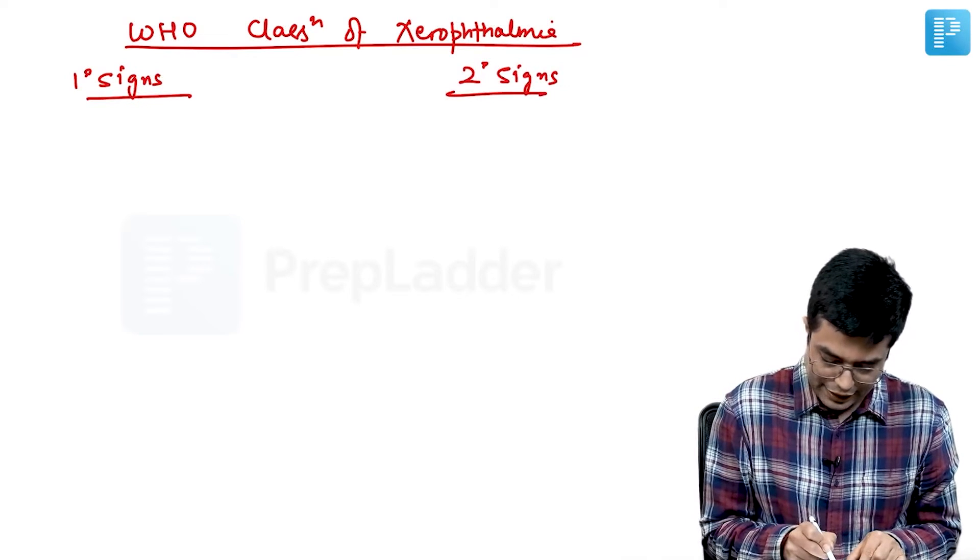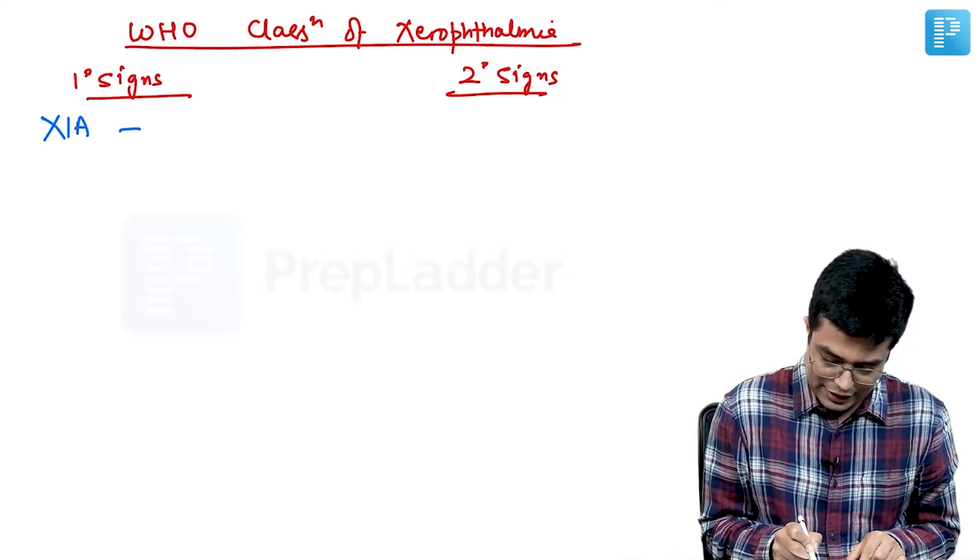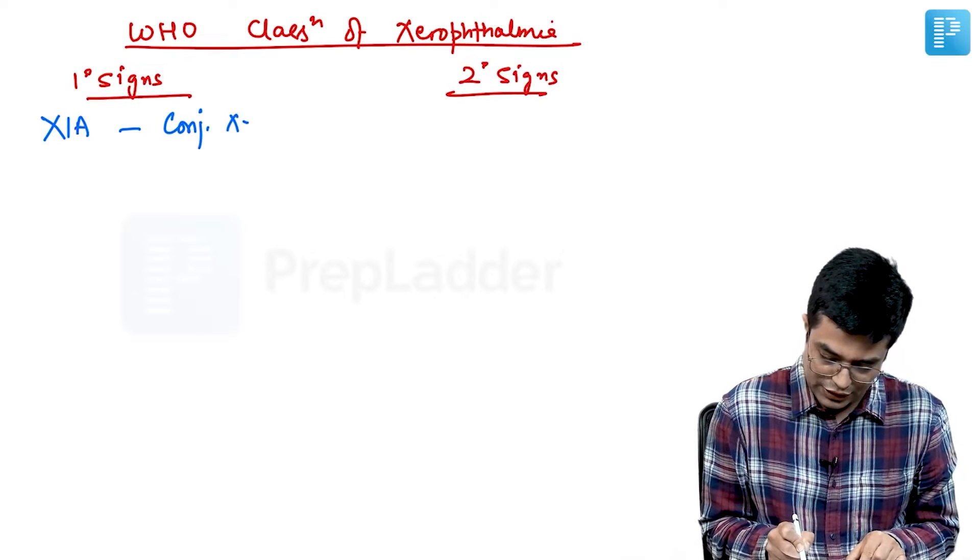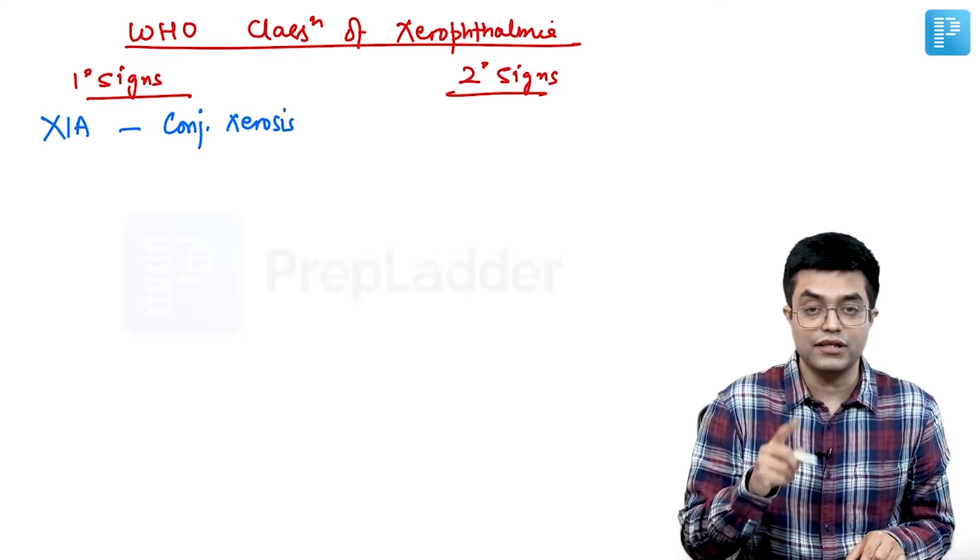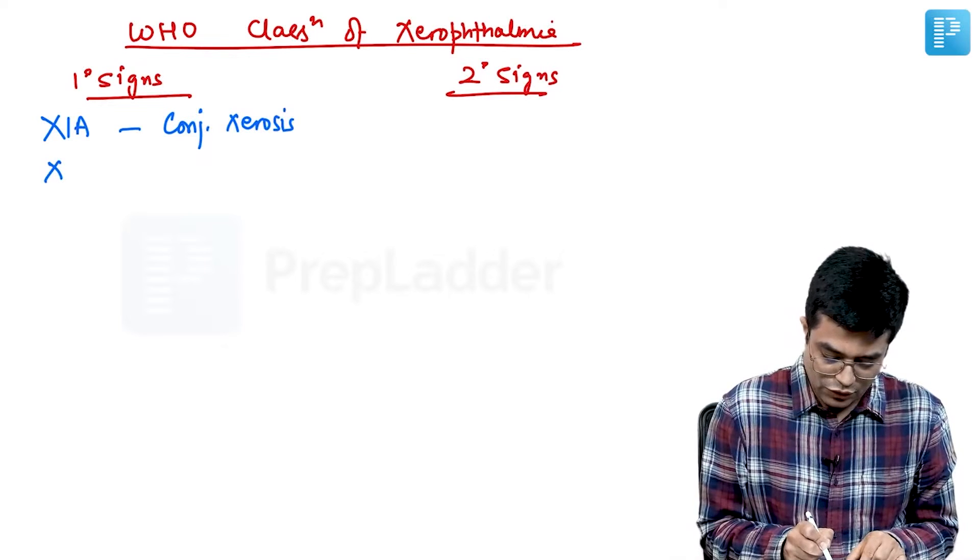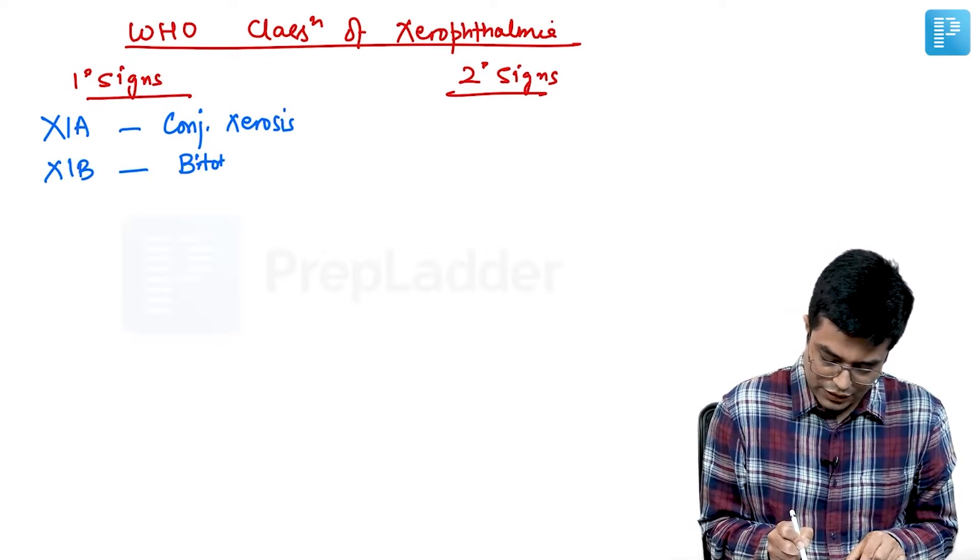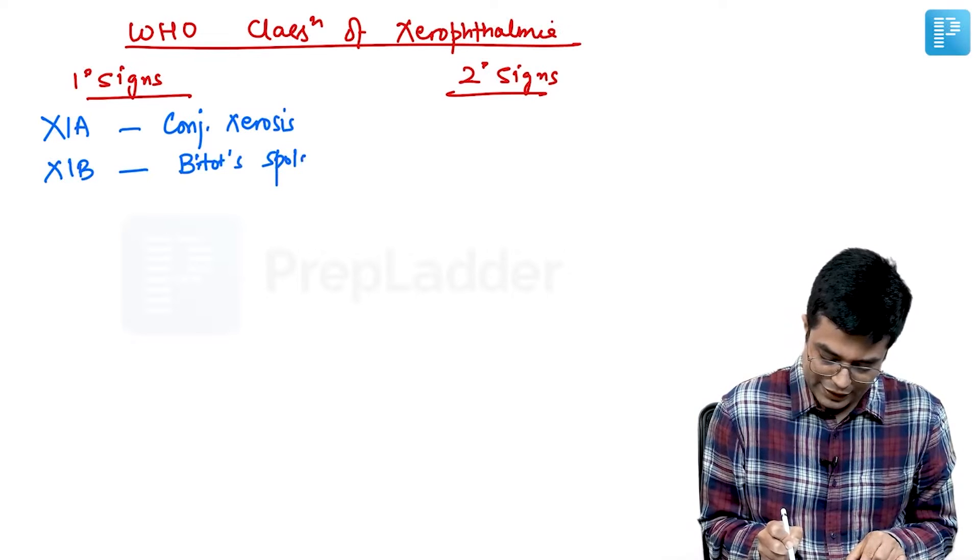we have X1A. X1A is conjunctival xerosis. So, dryness of the conjunctiva. X1B is presence of Bitot spots. Then,